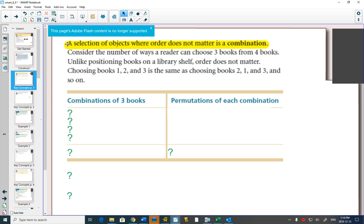So unlike positioning, there's going to be less ways. For example, what they have here is the combinations of the 3 books. You could pick book 1, book 2, or book 3.